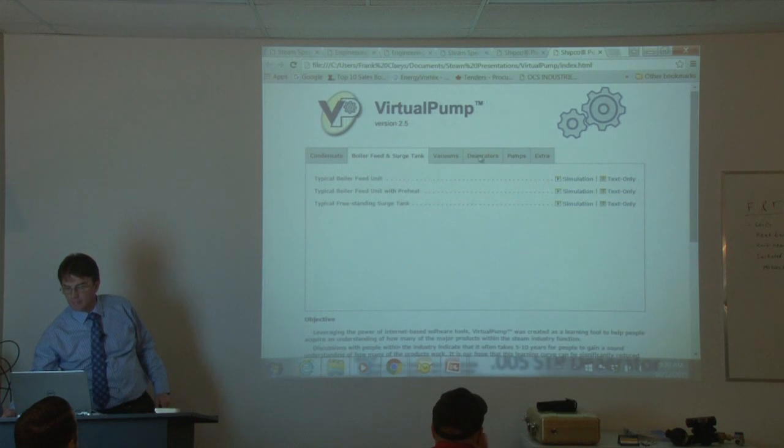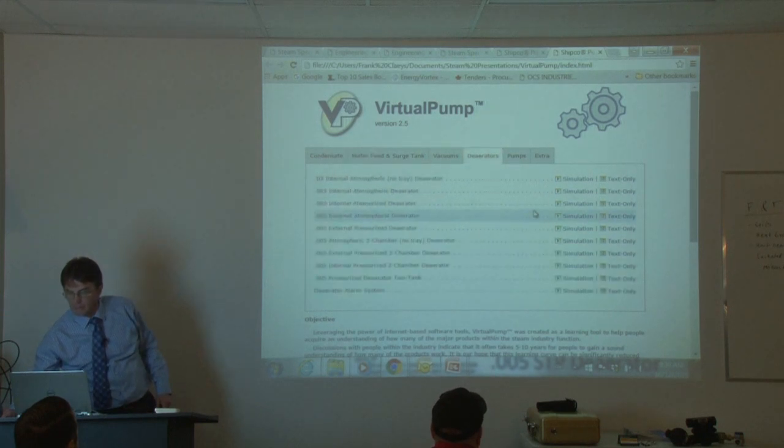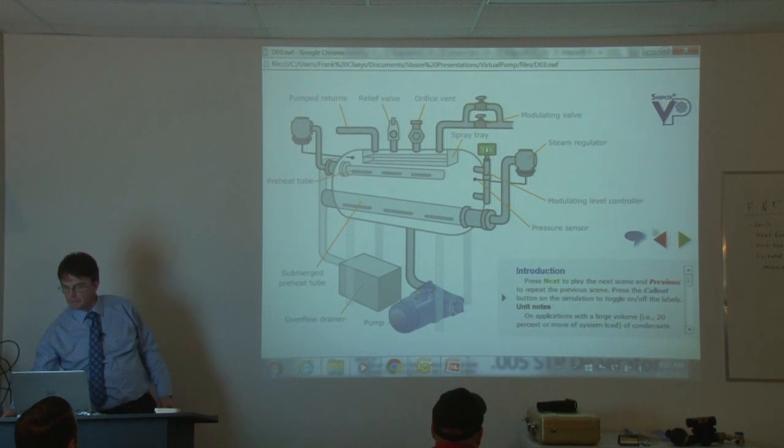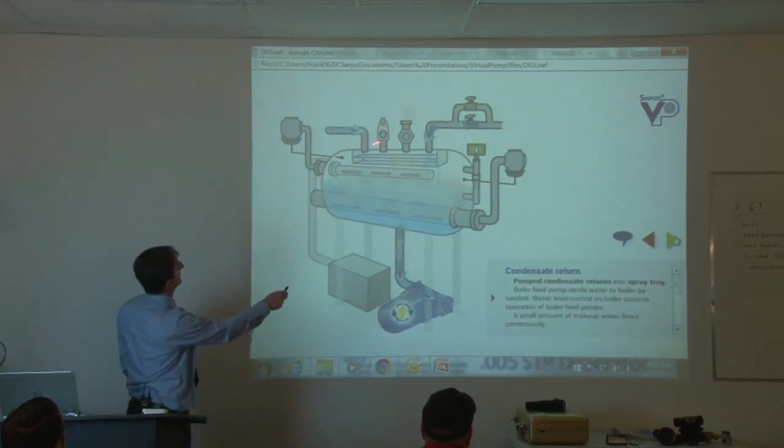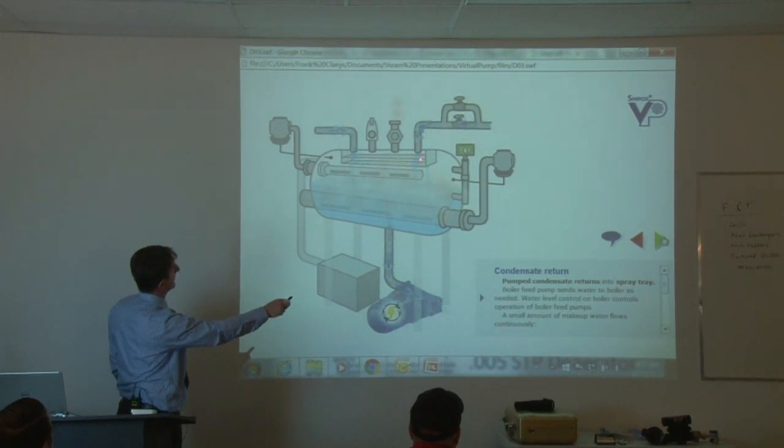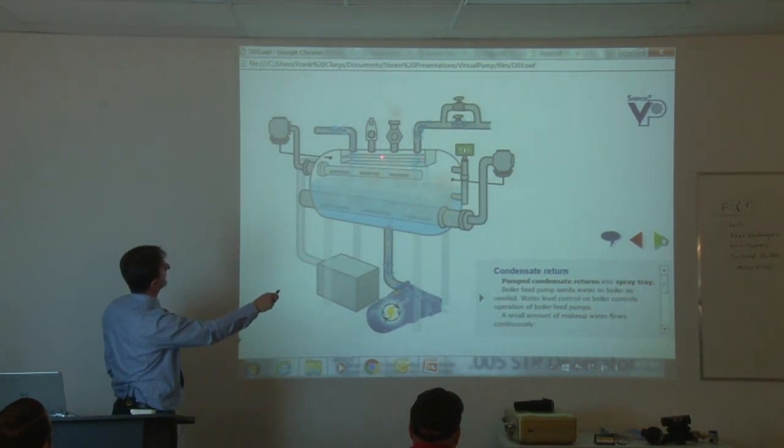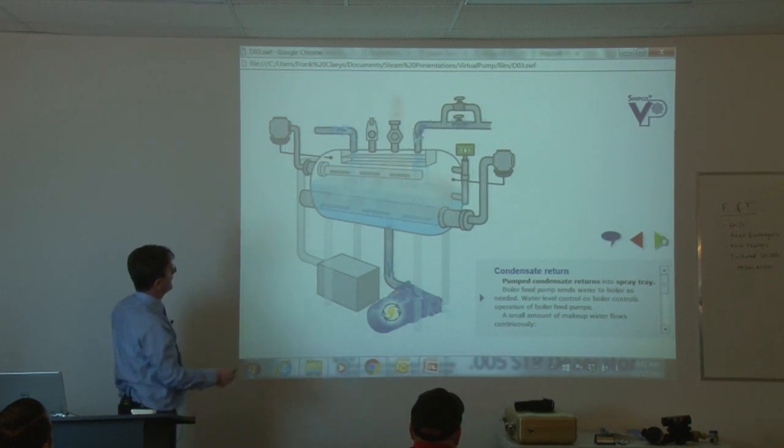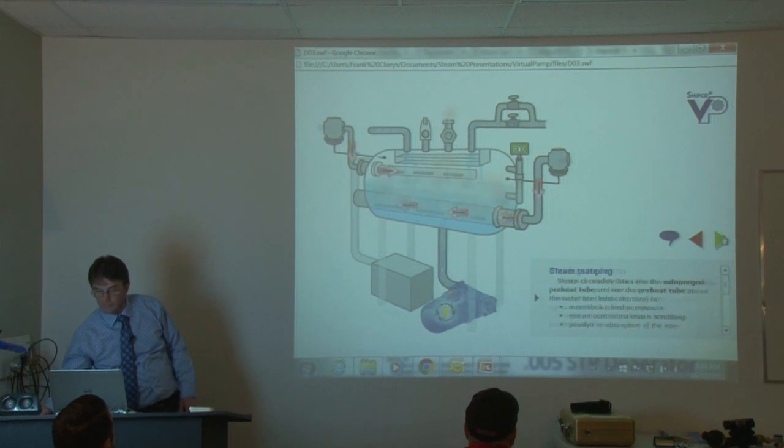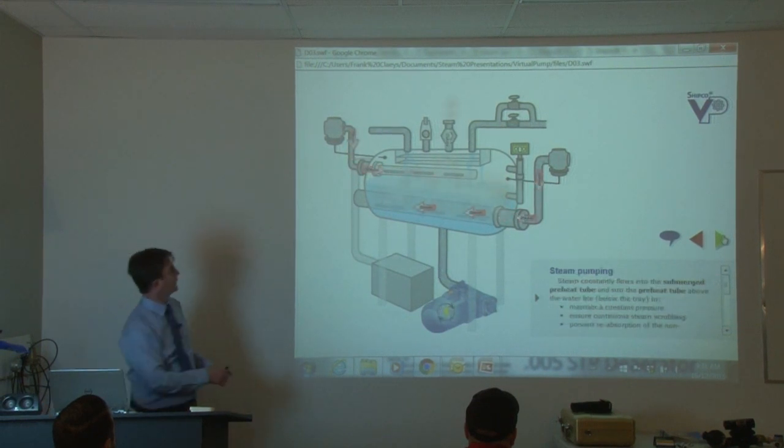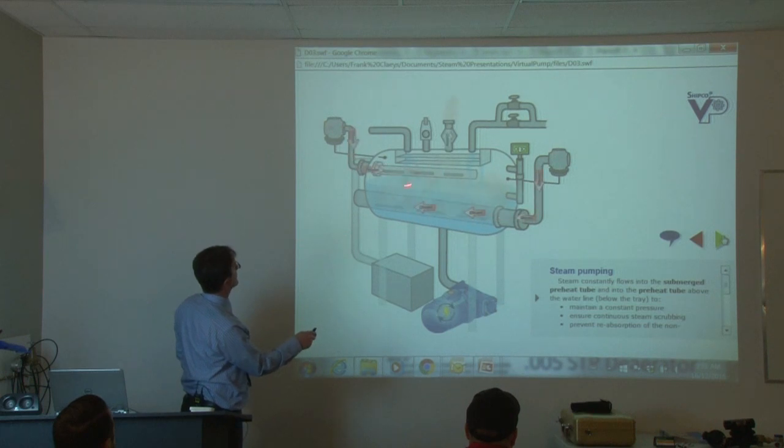So we take that one step further and we go to a de-aerator. That's why everybody says DA tank. It's so much easier to say. So your condensate is coming from one side and your fresh makeup is coming to the other side. It gets dribbled across the tray, the scrubbing effect. And then, so we still have steam coming in.